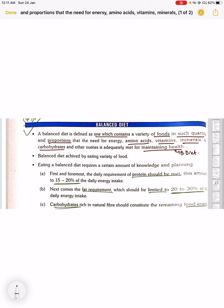Again, a balanced diet is defined as one which contains a variety of foods in such quantities and proportions that the need for energy, amino acids, vitamins, minerals, and carbohydrates and other nutrients is adequately met for maintaining health. Balanced diet is achieved by eating varieties of food - vegetables, milk, nuts, pasta - everything you have to take in your diet.